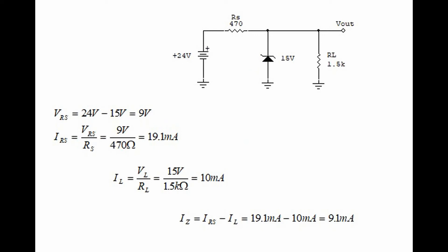One of the most useful applications of a zener diode is voltage regulation, because anything in parallel with the zener diode will drop the same voltage as the zener diode. In this case the voltage across the load will be 15 volts because it is in parallel with the 15-volt zener diode.